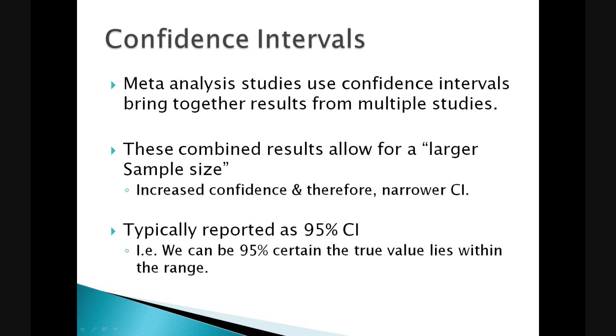Meta-analysis studies use confidence intervals to bring together results from multiple studies. These can be combined to allow for a larger sample size and therefore, as we have discussed, increasing confidence and narrowing the confidence intervals. Confidence intervals are also typically reported as 95%, meaning that we can be 95% certain that the true value lies within the range stated.